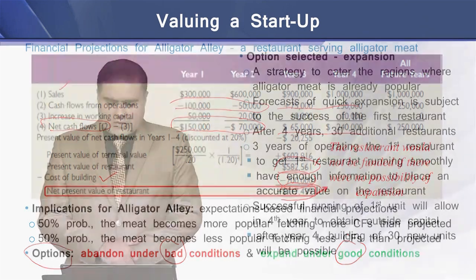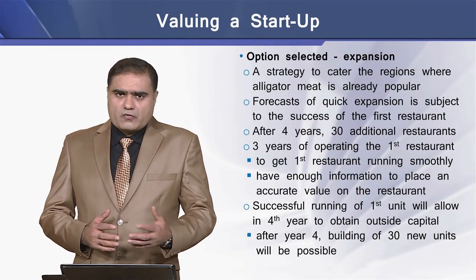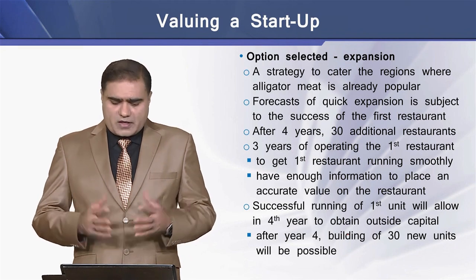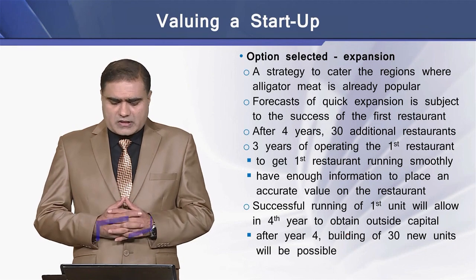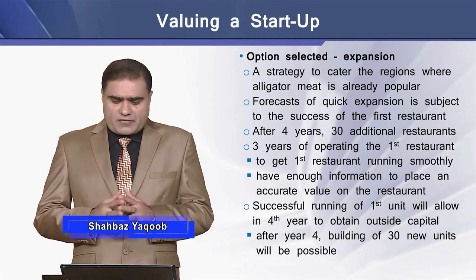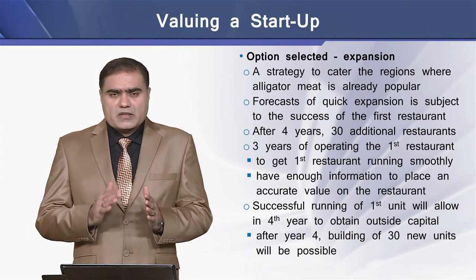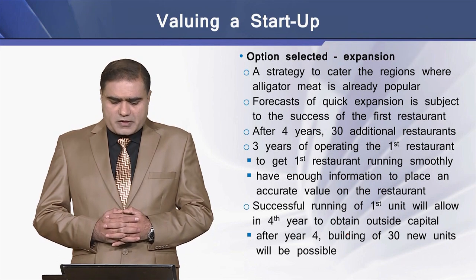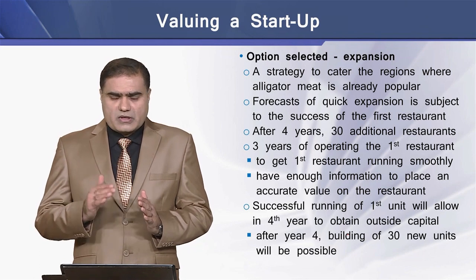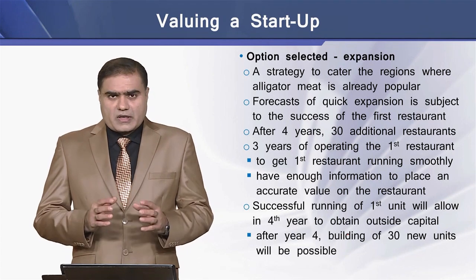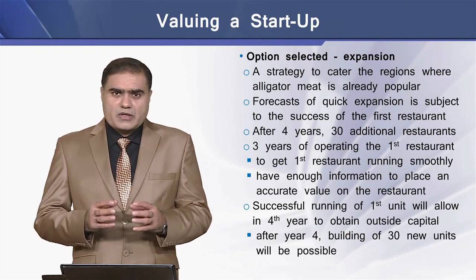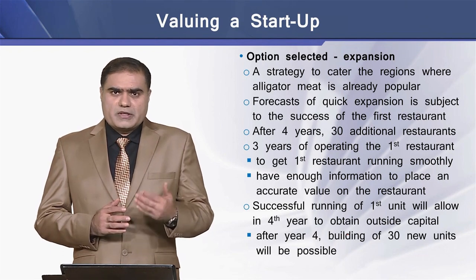Let's choose the option of expansion. There is a strategy to target regions where alligator meat is already popular, and the forecast of quick expansion is subject to the success of the first restaurant in those areas. After four years, if the project is successful, 30 more restaurants can be opened. The first three years are needed to run the first restaurant successfully and gather enough information for accurate forecasting to support opening 30 new units.